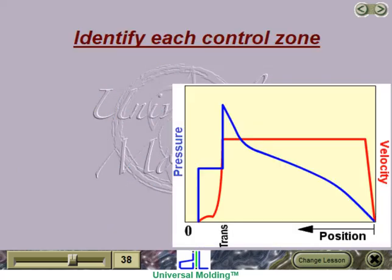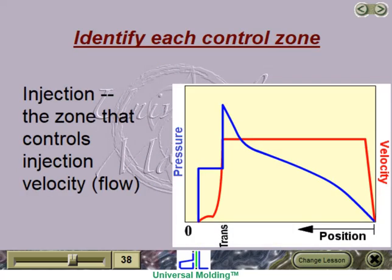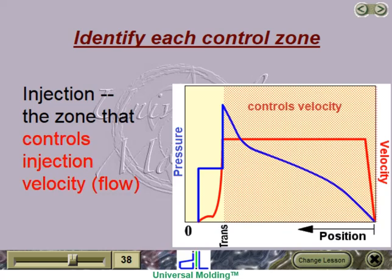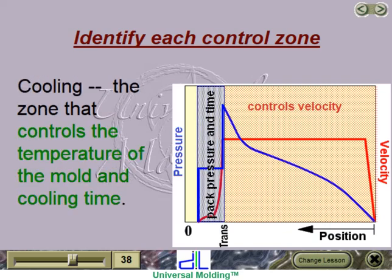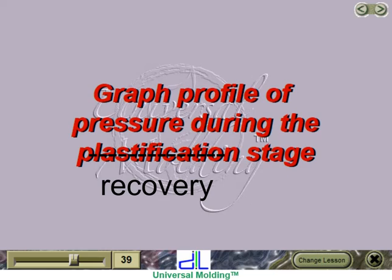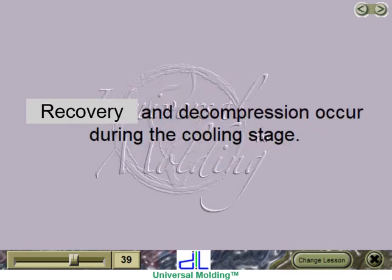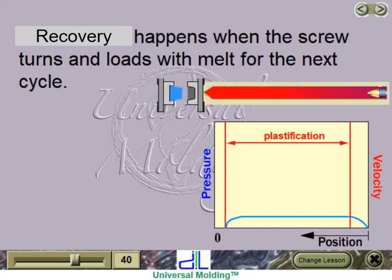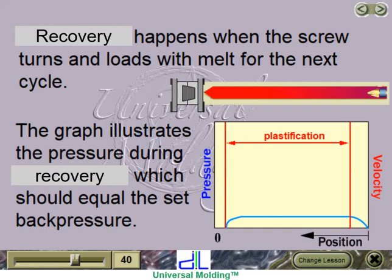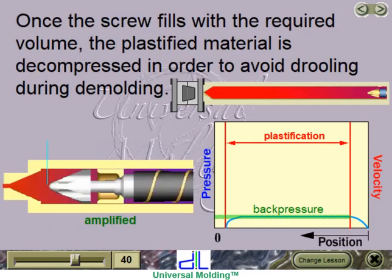Anyone who understands how to read these graphs should be able to interpret the process's behavior at each stage, even if that person is not a molder. Identify each control zone: Injection — the zone that controls injection velocity or flow; Pack — the zone that controls pack pressure and time; Cooling — the zone that controls the temperature of the mold and cooling time. Plastification and decompression occur during the cooling stage. Plastification happens when the screw turns and loads with melt for the next cycle. The graph illustrates the pressure during plastification, which should equal the set back pressure. Once the screw fills with the required volume, the plastified material is decompressed to avoid drooling during demolding.